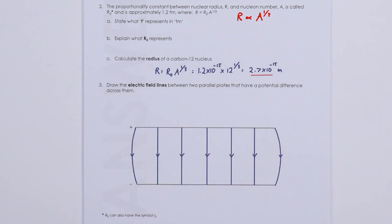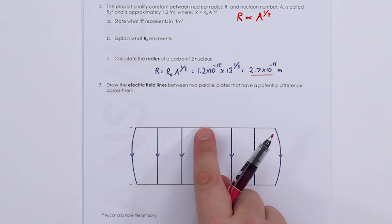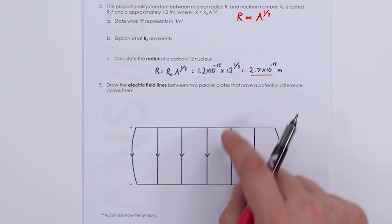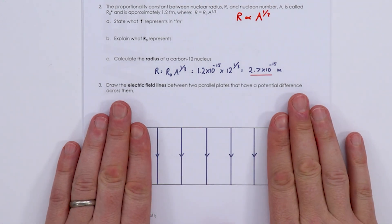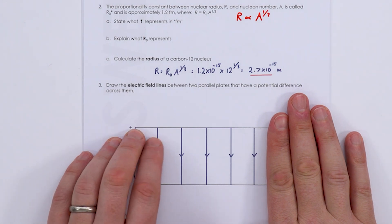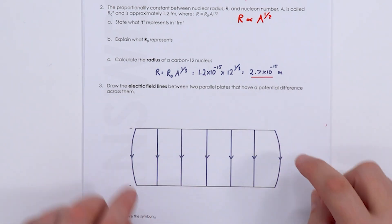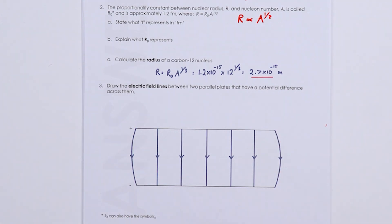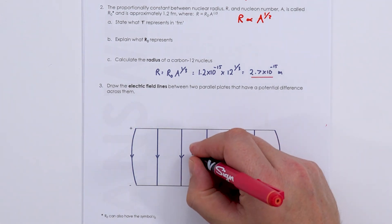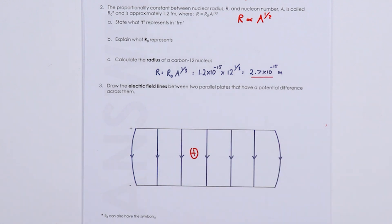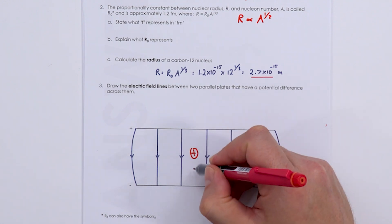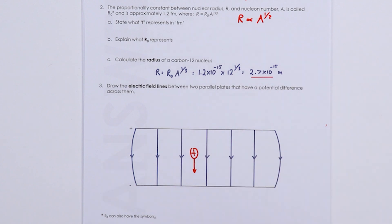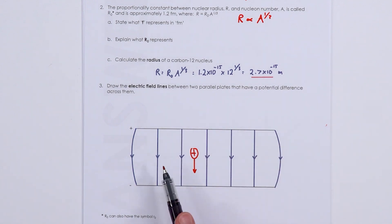Electric field lines between two parallel plates: in the region between the plates the field is uniform — equally spaced parallel lines. At the edges the lines curve outward slightly. Lines point from positive to negative plate, because a positive test charge would be repelled from the positive plate and attracted to the negative plate.